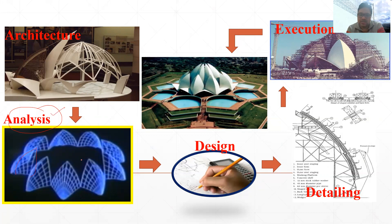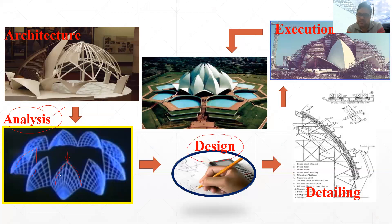Once the structure engineer has determined the forces in the building elements, the next step is design. Designing means proportioning the elements to resist a particular force — for example, determining what shape and size (such as thickness) a leaf element should be in order to resist a given force P.